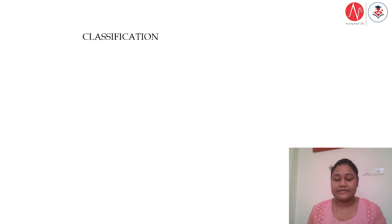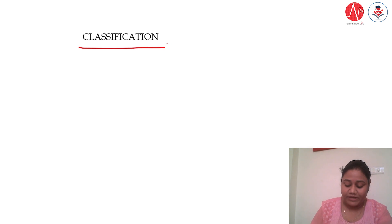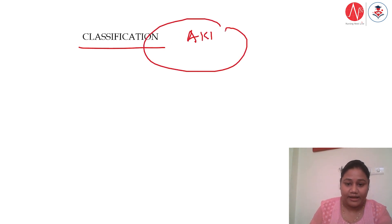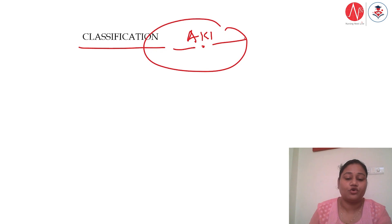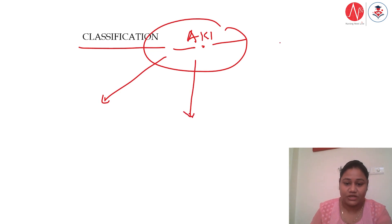Now let us discuss the classification. If we want to classify acute kidney injury, there are three classifications.